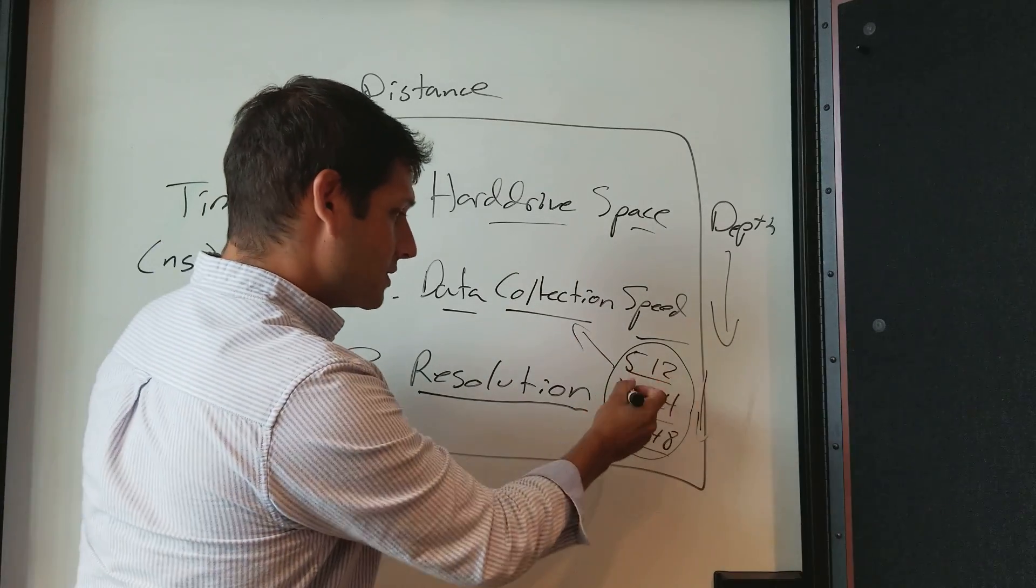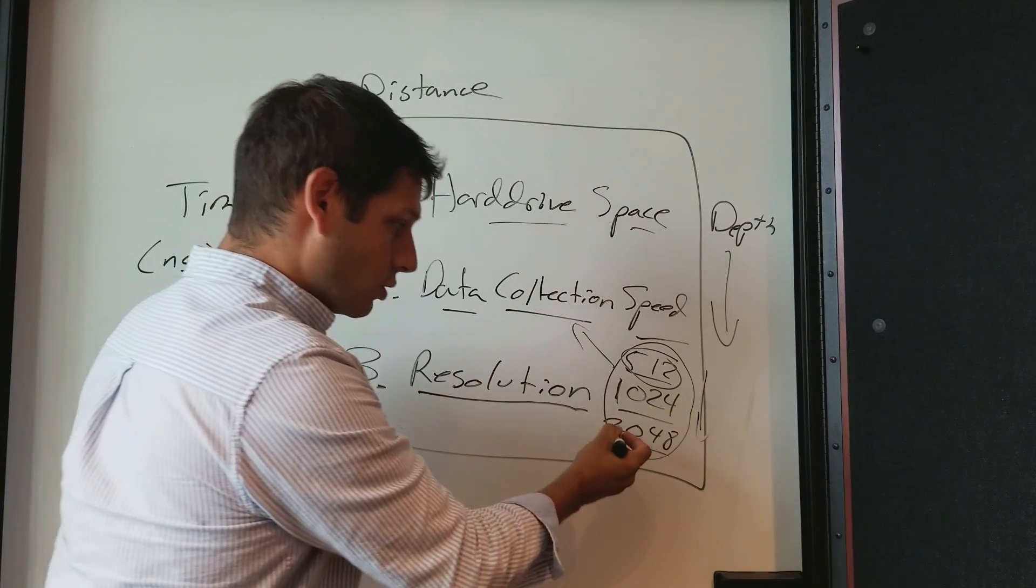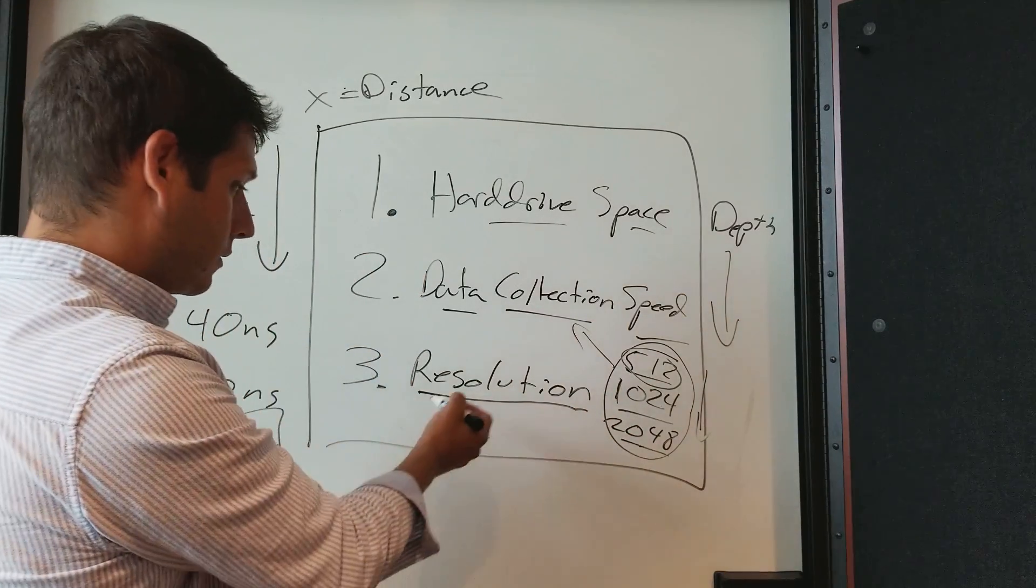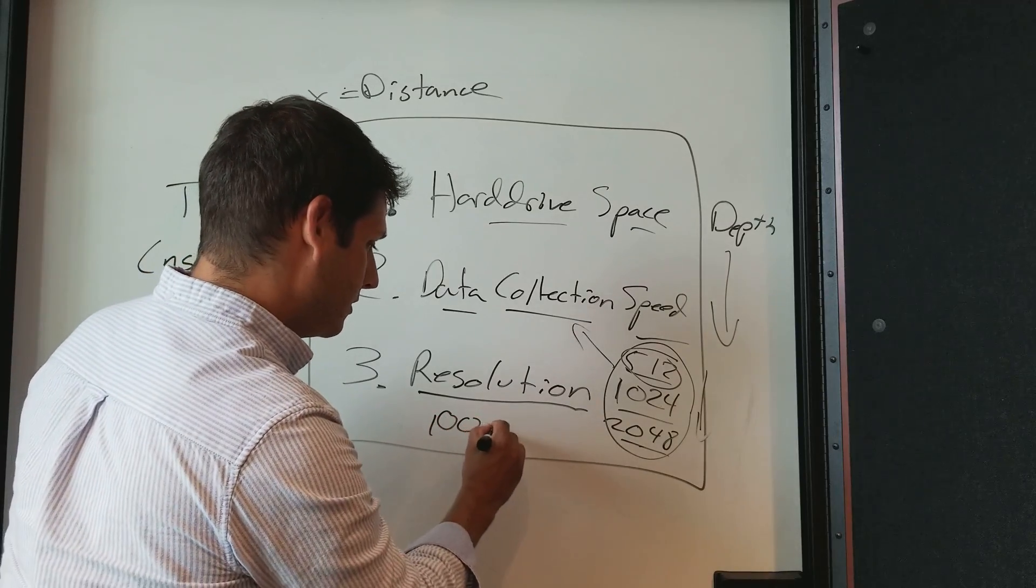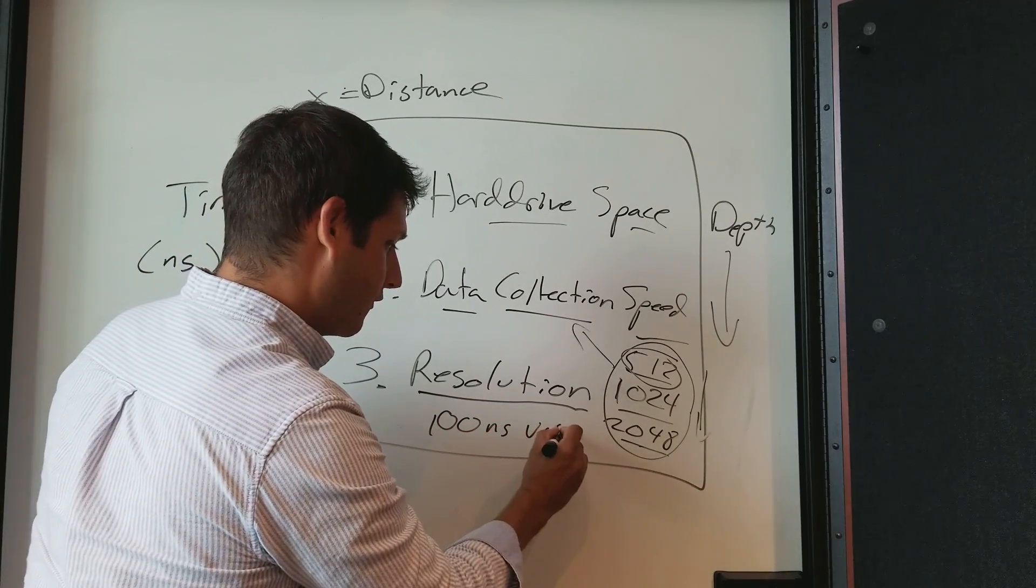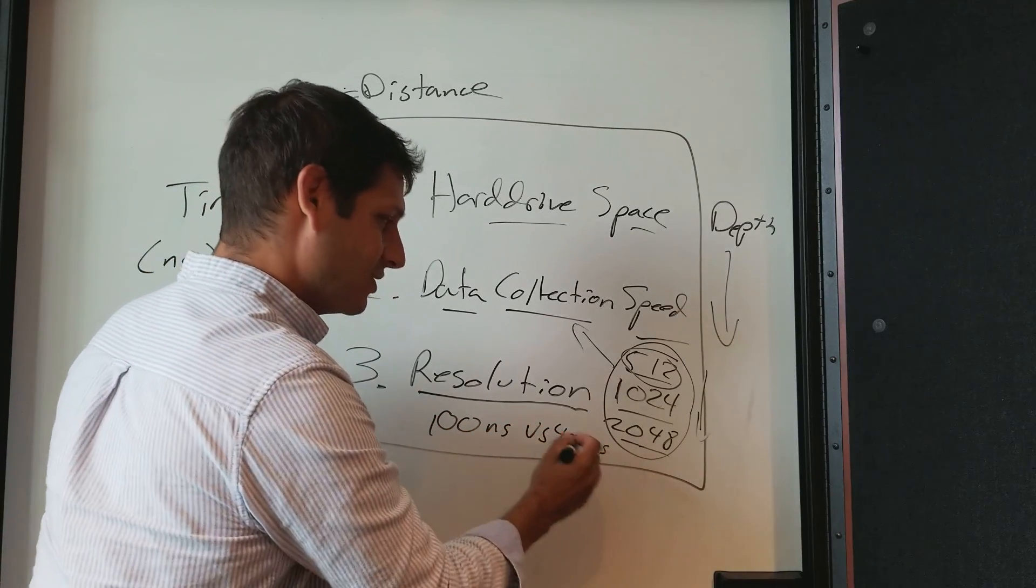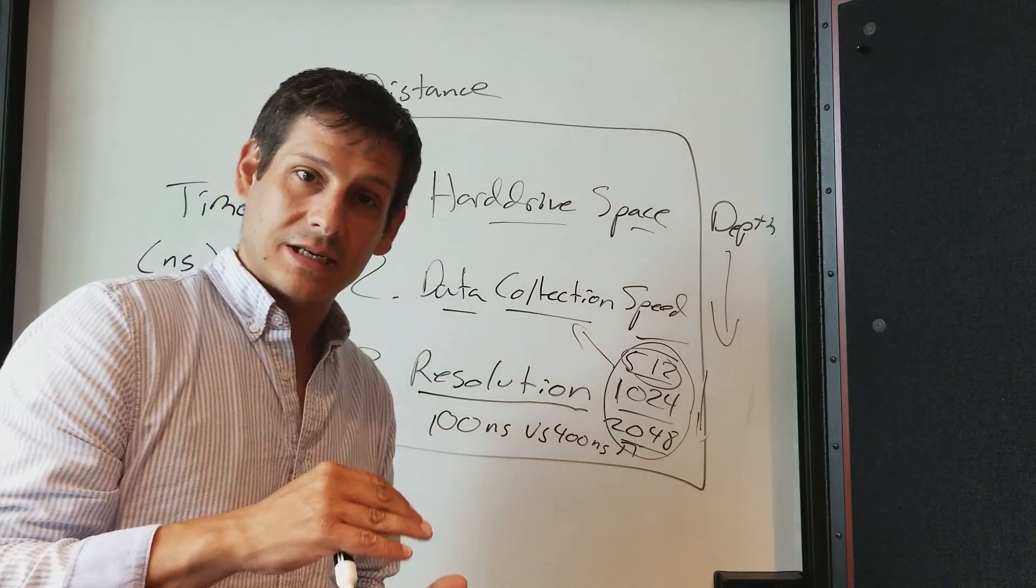So if you go up in density, data collection speeds go down. And for the same amount of points, you can still go to 2048 even with 100 nanoseconds versus 400 nanoseconds, you can still upgrade the points for greater density.